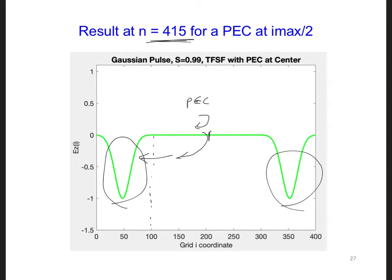Well, beyond the PEC plate, numerically, we still have an incident grid propagating in the incident grid. And this has an amplitude of 1.